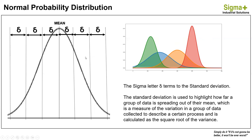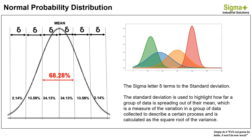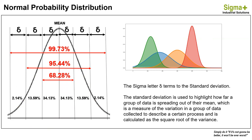From there we introduce the empirical rule. The empirical rule states that if a distribution follows a bell curve, approximately 68%, 95%, and 99.7% of the values fall within one, two, and three standard deviations around the mean respectively. More precisely, within one standard deviation you will find 68.28% of the data; within two standard deviations, 95.44%; and within three standard deviations, 99.73% of the data.